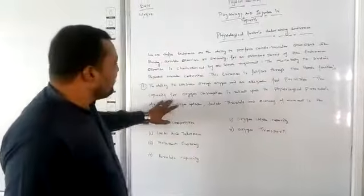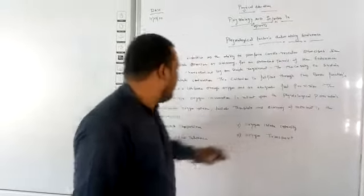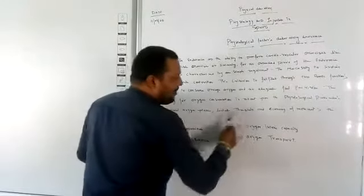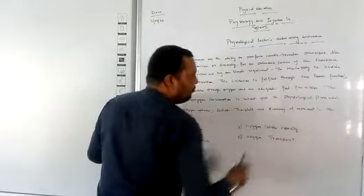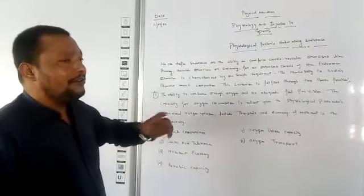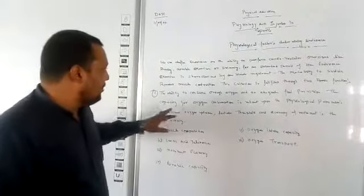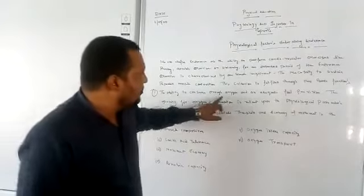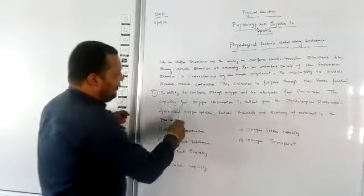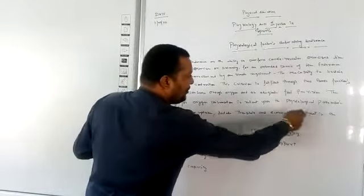The capacity for oxygen consumption is reliant upon the physiological parameters of maximum oxygen uptake, lactate threshold, and economy of movement. This is the second function regarding sustaining resistance against longer duration. The first is consuming enough oxygen and adequate fuel provision; the second is that capacity for oxygen consumption is reliant upon these physiological parameters.